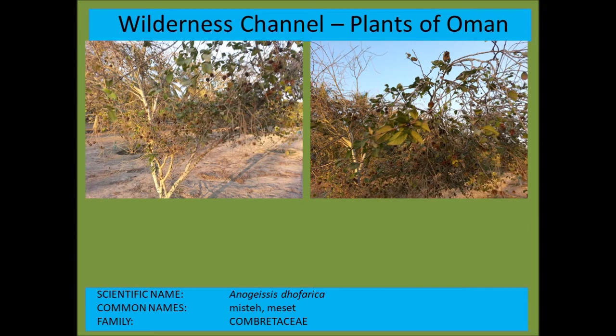Anogeissus dhofarica is a tree that was only described many years after the first European explorers were in the area. It's actually very common but was somehow overlooked. It's from the Combretaceae, the bush-willow family.